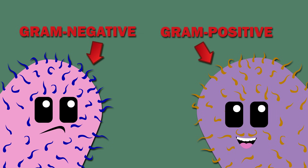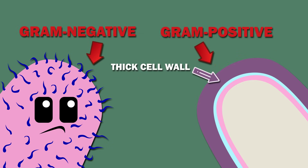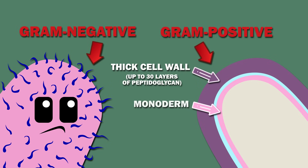Gram-positive bacteria have a thick cell wall, which consists of up to around 30 layers of peptidoglycan. This cell wall surrounds a monoderm, which is a single plasma membrane.